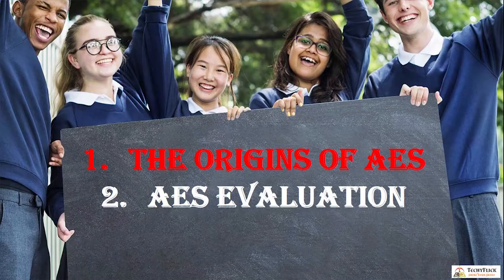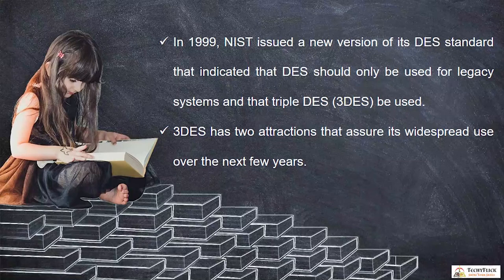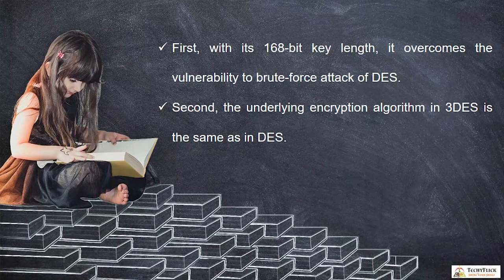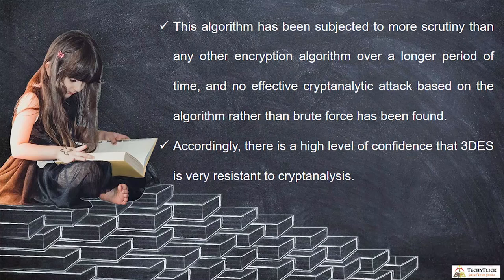In 1997, NIST issued a call for a new advanced encryption standard. In 1999, NIST issued a new version of its DES standard indicating that DES should only be used for legacy systems, and that Triple DES be used. Triple DES has two attractions: first, with its 168-bit key length, it overcomes the vulnerability to brute force attack of DES. Second, the underlying encryption algorithm Triple DES is the same as in DES, and has been subjected to more scrutiny than any other encryption algorithm.